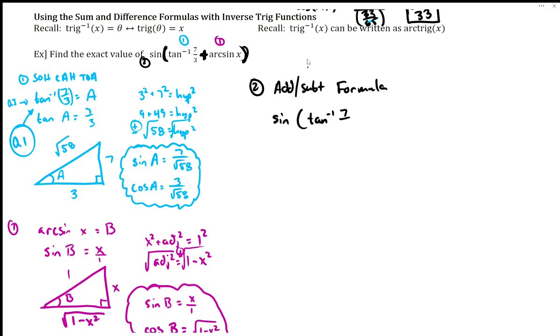So sine of tangent inverse of seven-thirds plus arc sine of x is the same thing. In the rewrites we're saying that tangent inverse of seven-thirds is a, and arc sine of x is b. So now it looks like sine of a plus b. Sine of a plus b looks more familiar to our normal addition formula. So sine addition means to do sine of a cosine of b plus sine of b cosine of a.